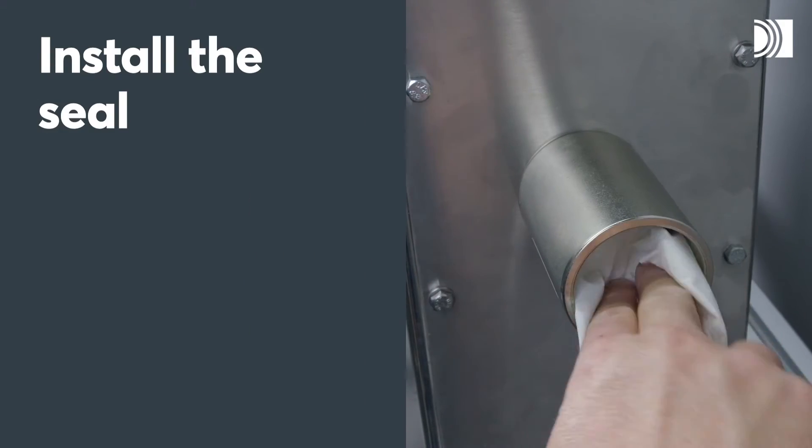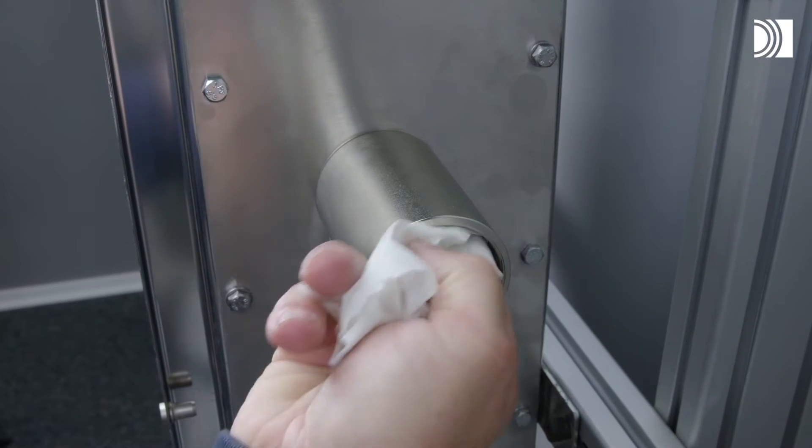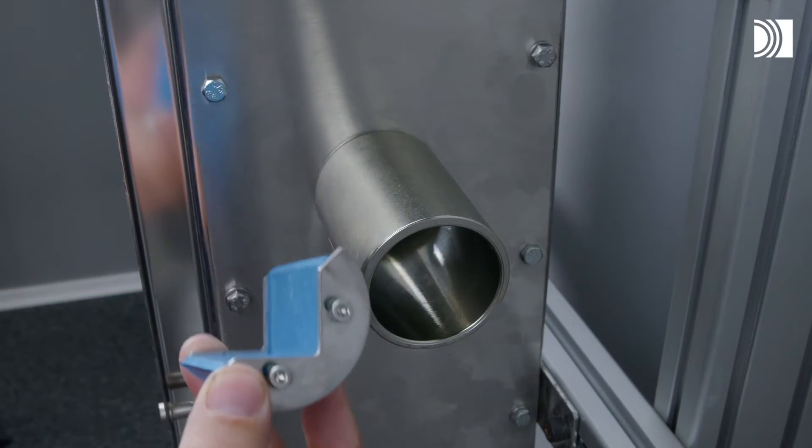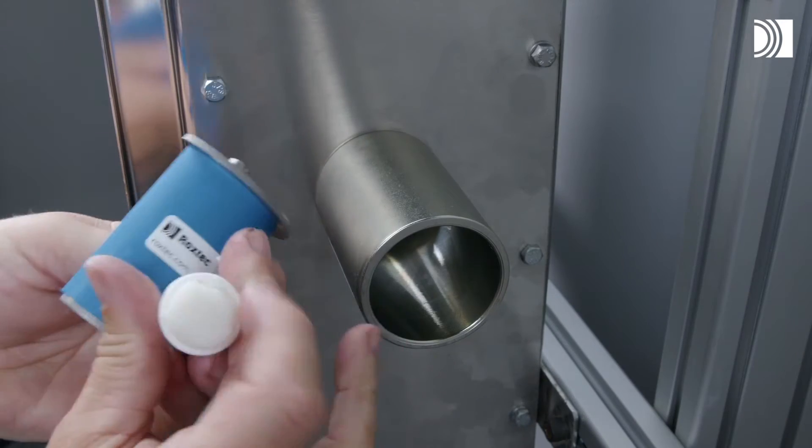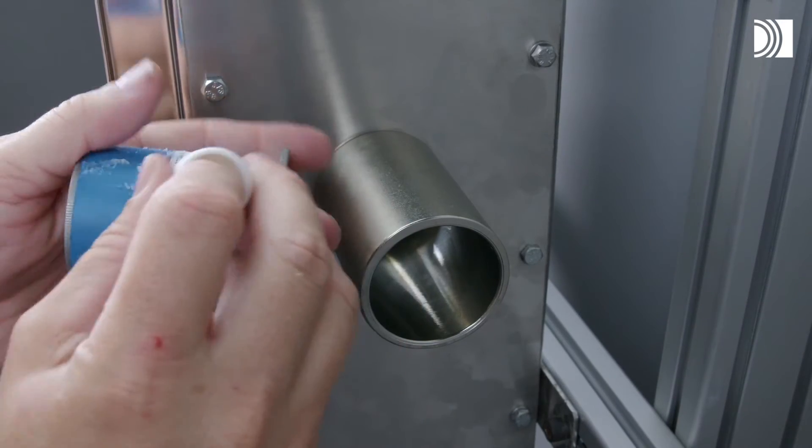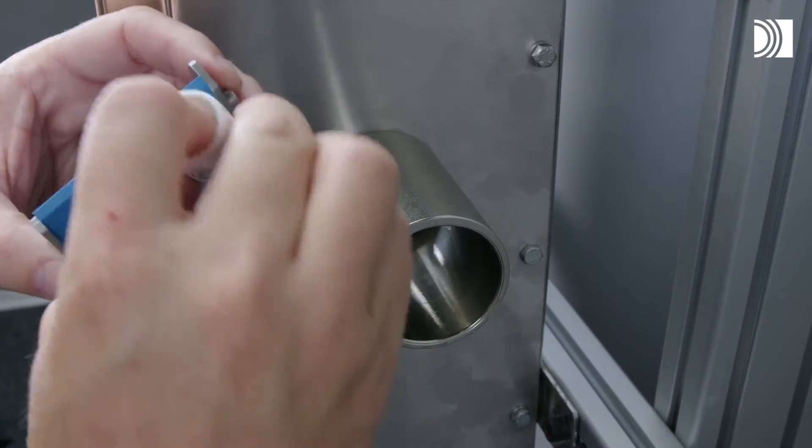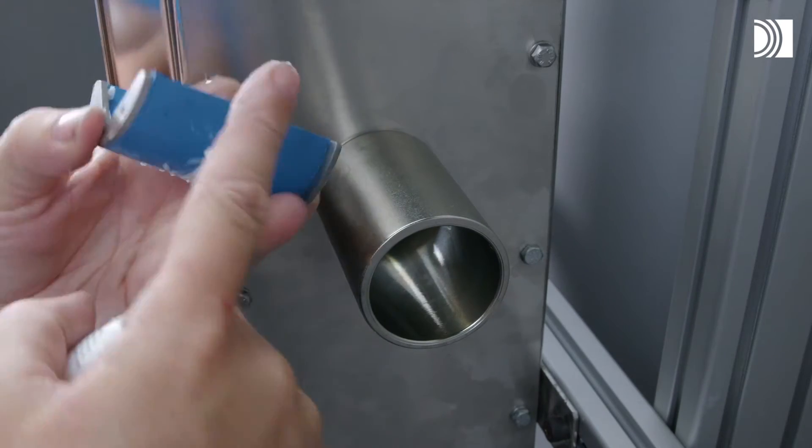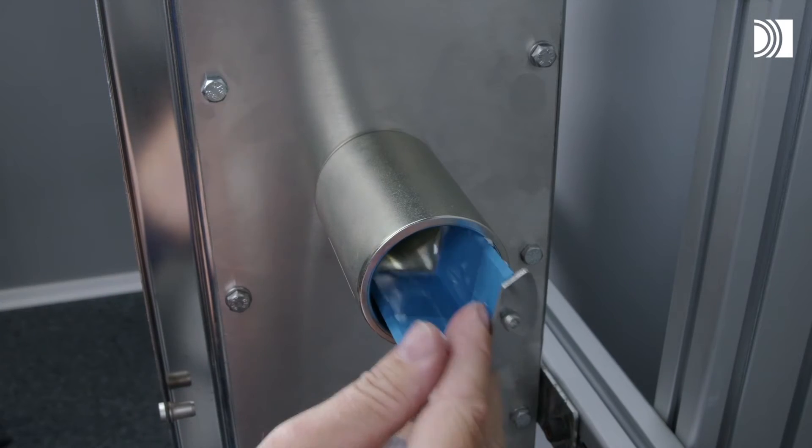Install the seal. Make sure the sleeve is clean. Lubricate the frame sparsely on the outside with Roxtec lubricant. Insert the frame into the sleeve.